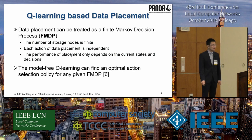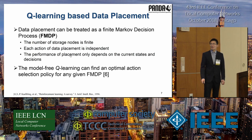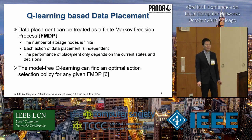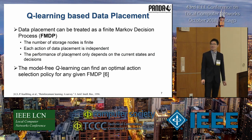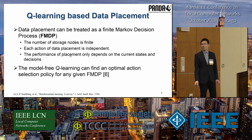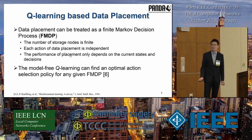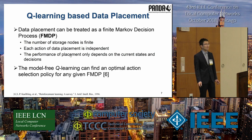Why can Q-learning be used to solve the data placement problem? Data placement can be treated as a finite Markov decision process for three reasons. First, the number of storage servers is finite. Second, each action of data placement is independent — the performance of placement only depends on the current states and decisions. It has been proved that model-free Q-learning can find the optimal action selection policy for any given finite Markov decision process. So Q-learning is used as the basis of our design.